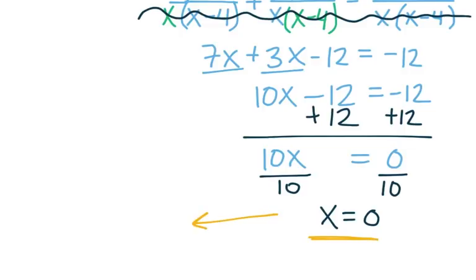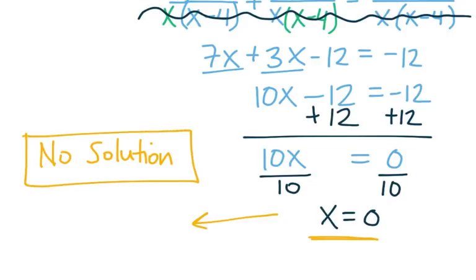So my final conclusion to this problem is actually going to be there's no solution. The domain says I can't use the 0 I just found, so no value of x would make that equation true. If you like, you could also use the empty set to notate no solution.